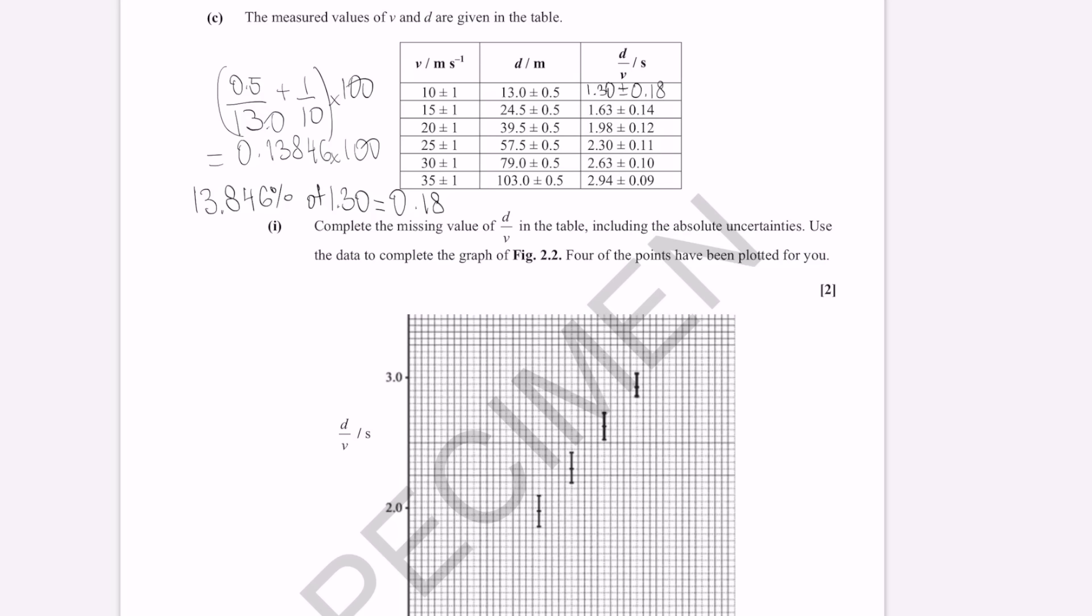So the value that should go in here is plus or minus 0.18. You can also do that with absolute uncertainties. Half the range, you'll probably get a very similar result. Let me know if you've done it this way.